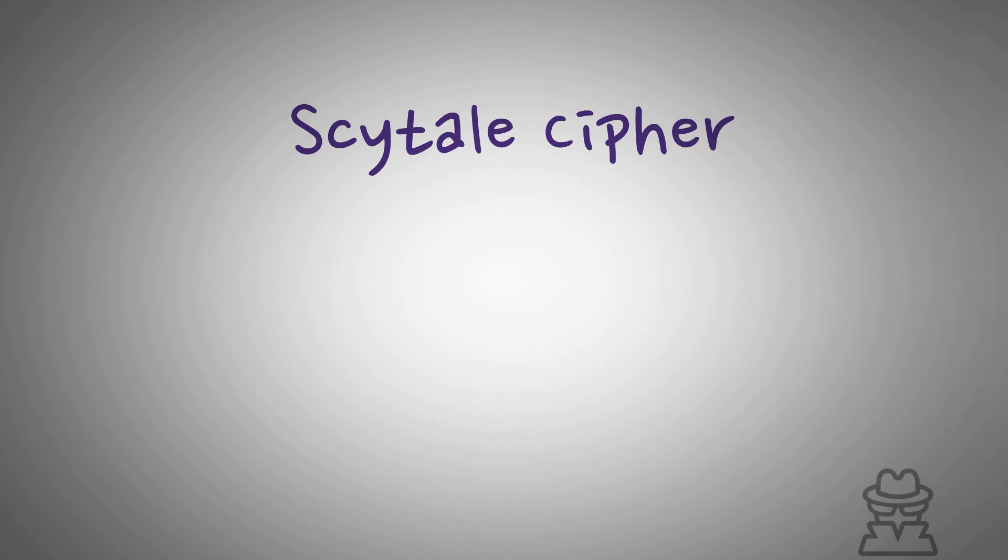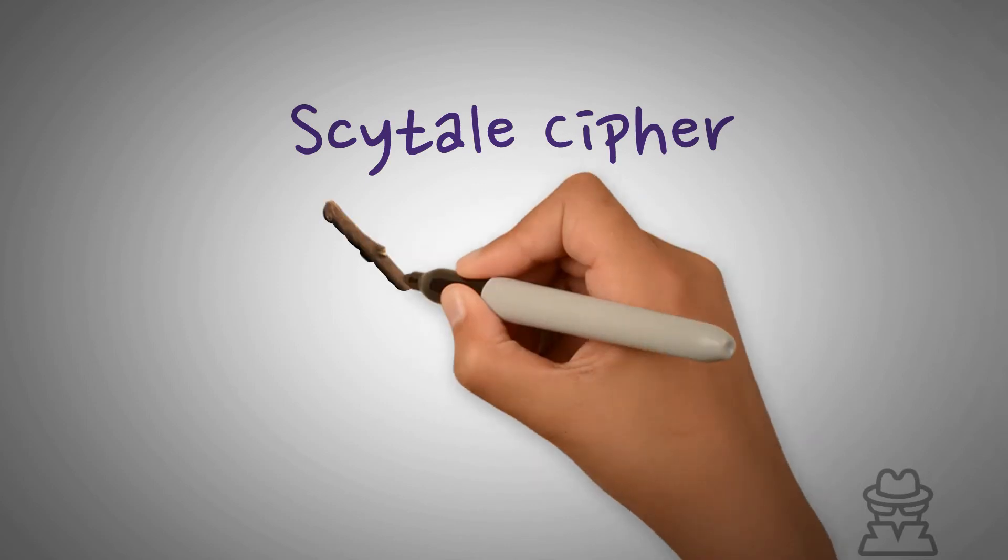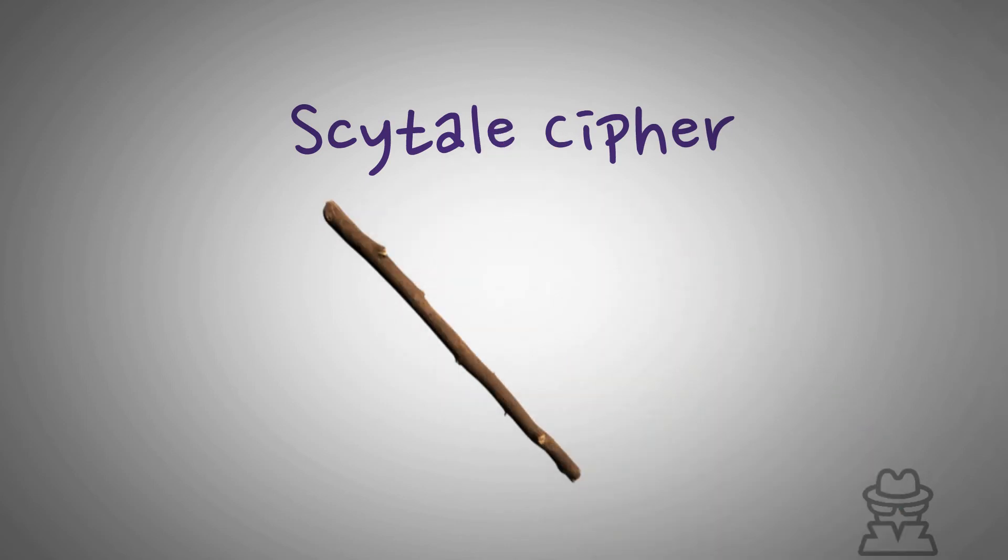It was used by ancient Greeks and relied on a cylinder with a ribbon wrapped around it. The sender would write his message on the ribbon while it was wrapped. Then when it was unwrapped, it left nothing but a jumble of letters. As long as the recipient had a cylinder of similar diameter, they could recoil the ribbon and read the secret message.